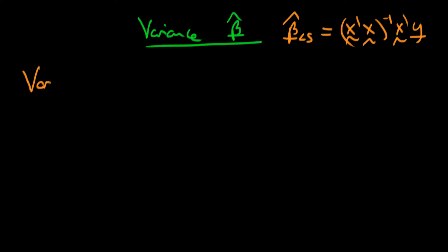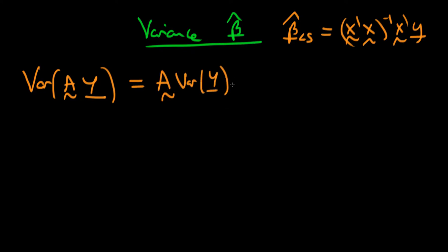One of those results is that the variance of a product of a non-stochastic matrix A times a stochastic matrix Y is in fact equal to A times the variance of Y times A transposed. This holds for all matrices where A is non-stochastic and Y is stochastic. Using this relationship we can write out the variance of beta hat least squares.